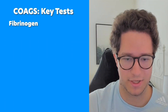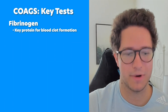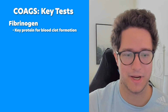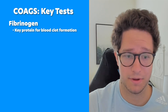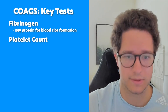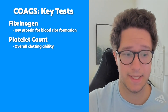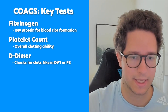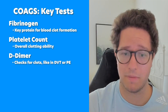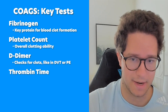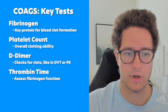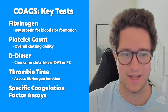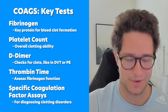Another component of the coagulation panel is fibrinogen, a key protein necessary for blood clot formation. In some hospitals, a coagulation panel might also include the platelet count for overall clotting ability, a D-dimer to check for clots like in DVT or PE, the thrombin time to assess fibrinogen function, or specific coagulation factor assays for diagnosing clotting disorders.